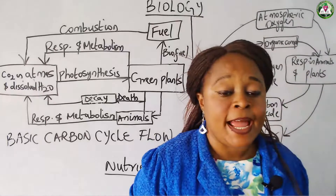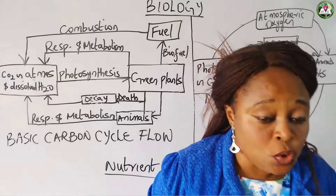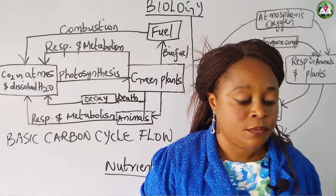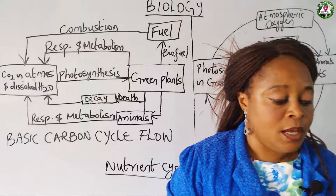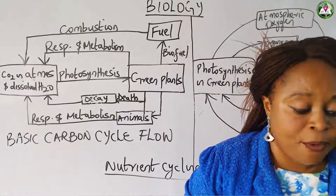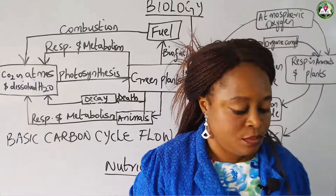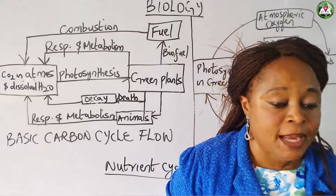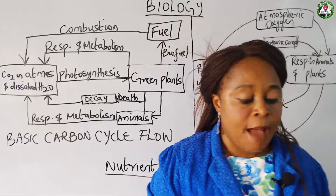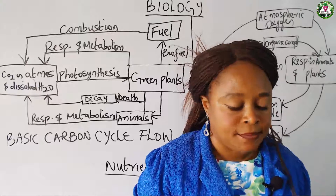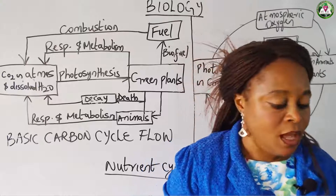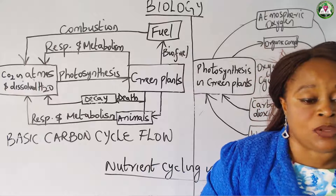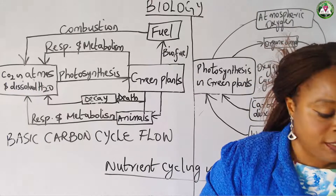By the end of this lesson, you should be able to: one, define the carbon and oxygen cycle; two, explain the carbon-oxygen balance; and three, draw the carbon and oxygen cycle.